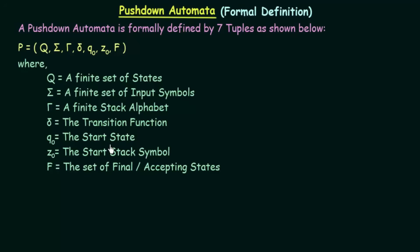Q0 is the start state, the same as in finite automata where Q0 represents the initial state. Z0 represents the start stack symbol — this was not present in finite automata. In push down automata we have a stack, and Z0 represents the first symbol or start symbol present in the stack. Finally, F is the set of final states or accepting states, the same as in finite automata.